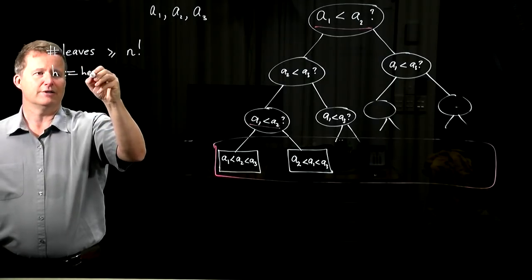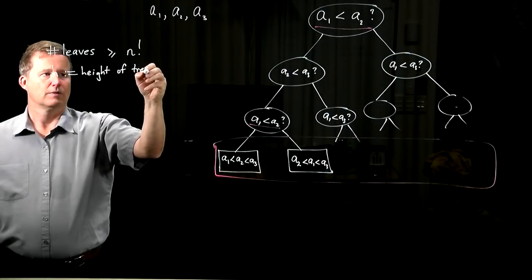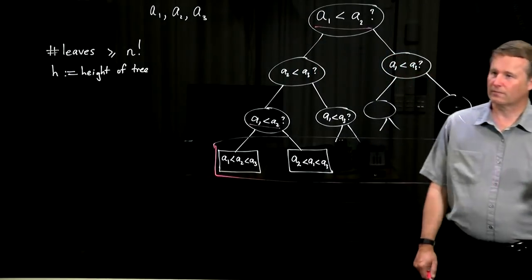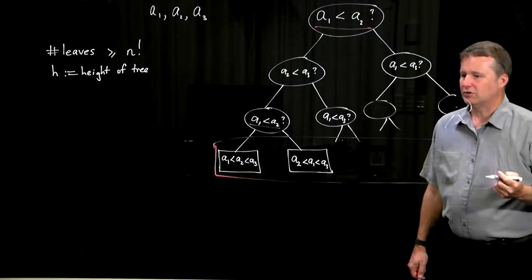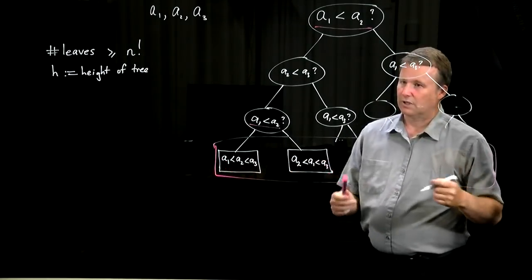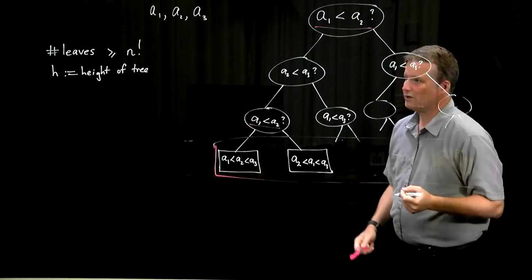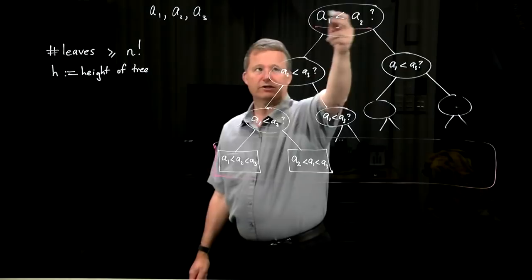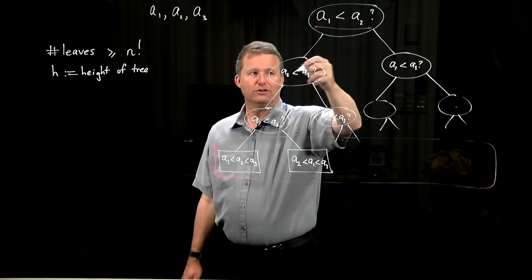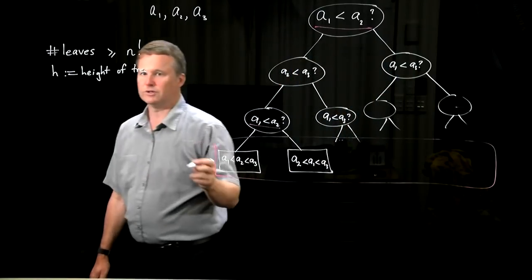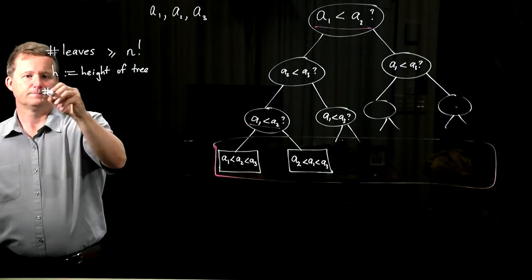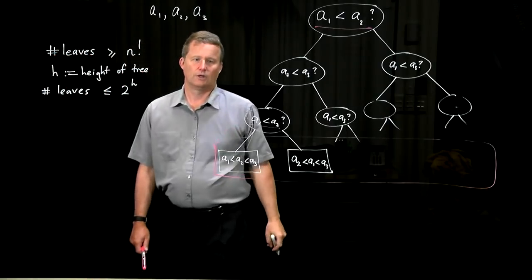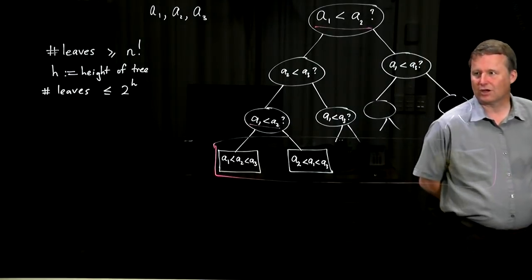If h is the height of the tree, then how many leaves can it have? It's a binary tree. How many leaves can a tree of height h have? You can see here we've got quite a large number of leaves. If the height is too small, we're just not going to be able to get that many leaves. But let's quantify that. h is the height of the tree. A tree of height 0 has 1. Tree of height 1 can only have 2 leaves. Tree of height h can't have more than 2 to the h leaves. Because it's at most doubling each time you go down.